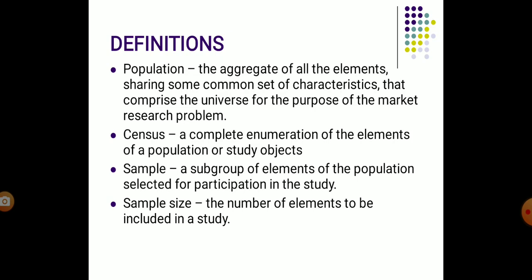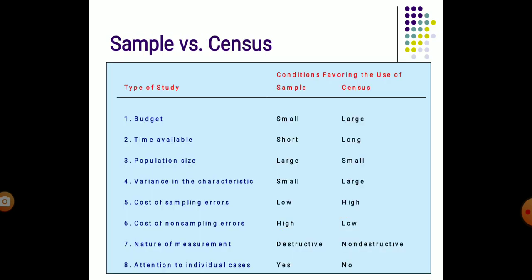To summarize the four terminologies: population is the aggregate of all elements; census means selecting all elements; sample means selecting a few elements from the population; and sample size is the number of elements included in the study.